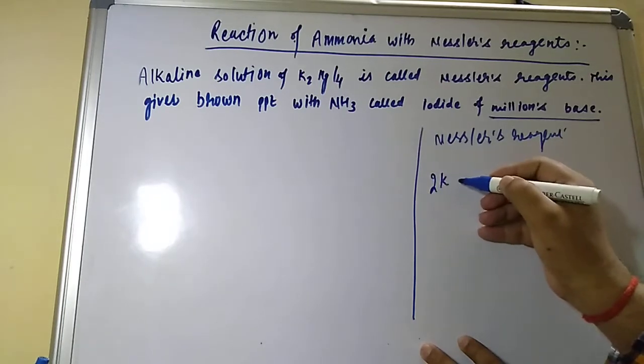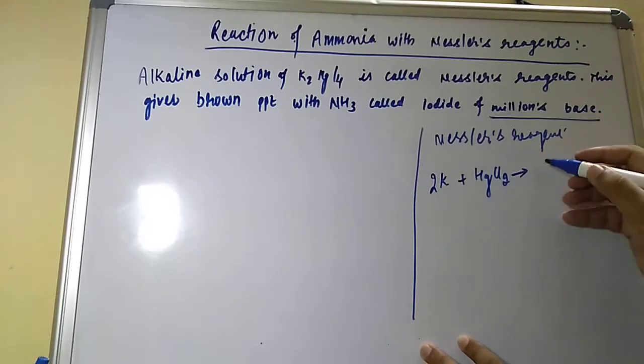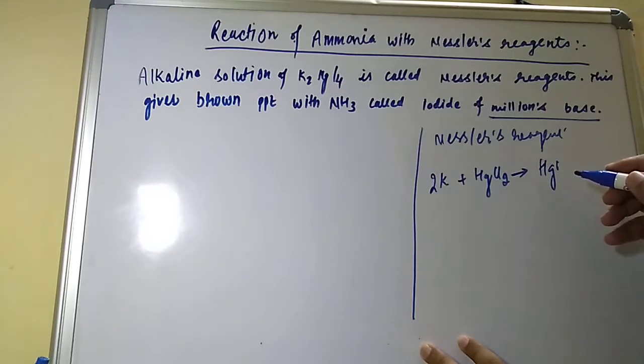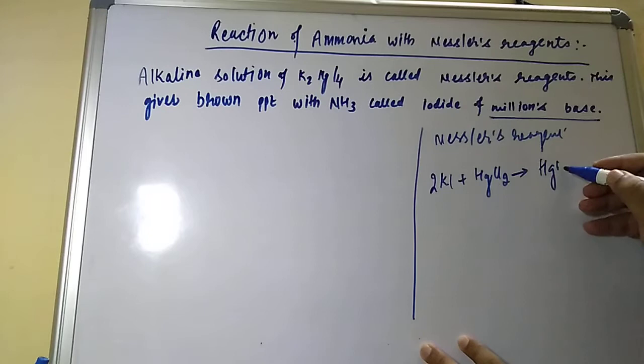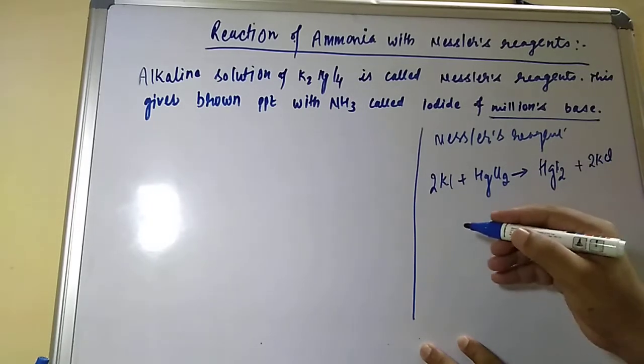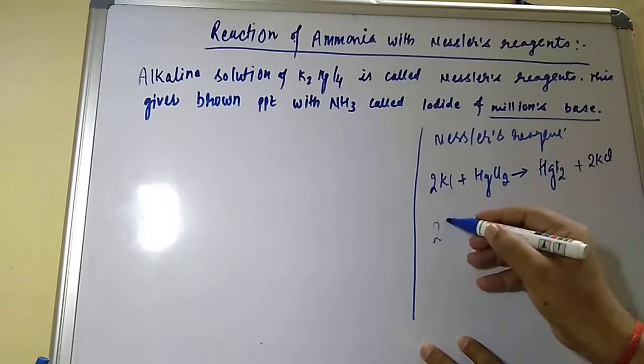You take potassium and treat with HgCl2, so it will first give HgI2. This KI solution will give HgI2 plus 2KCl. Now take this HgI2 and again treat with 2KI. So again I am taking 2KI plus HgI2.